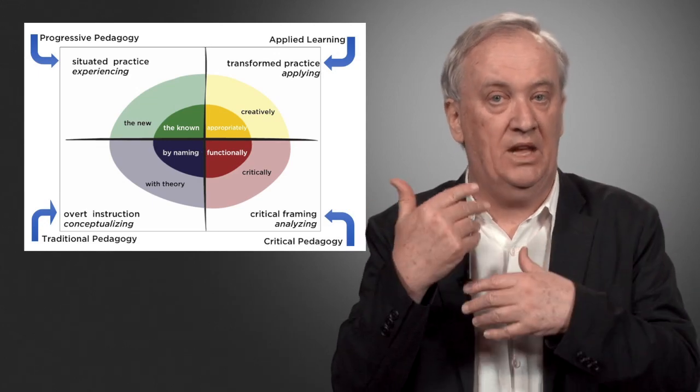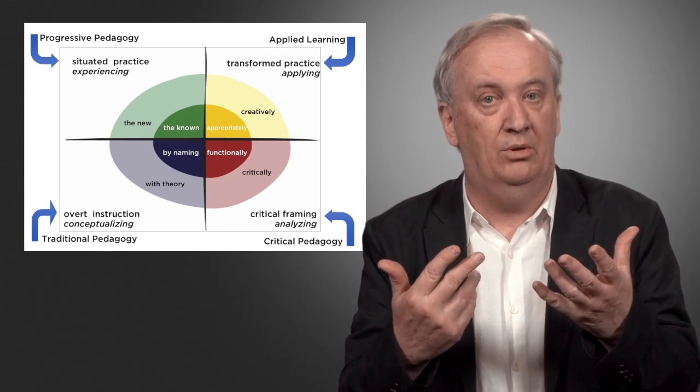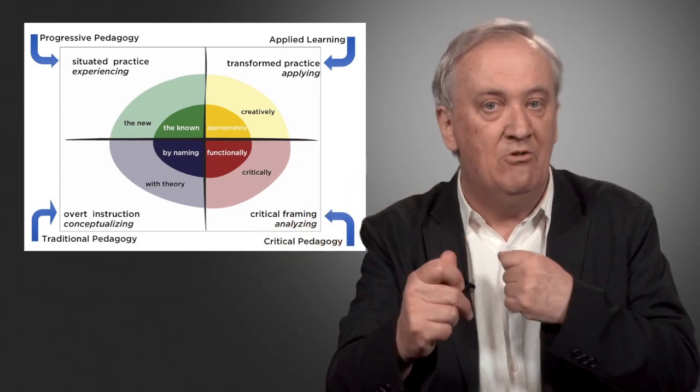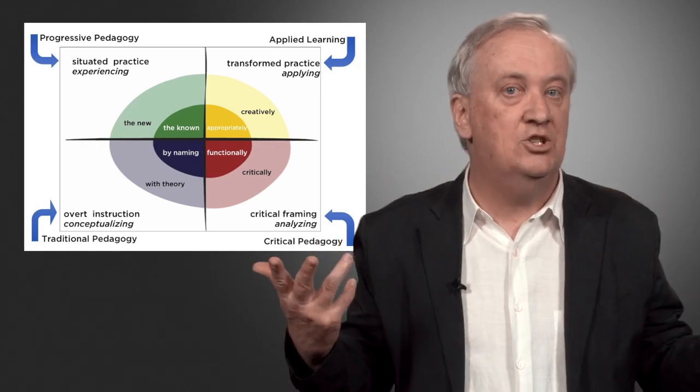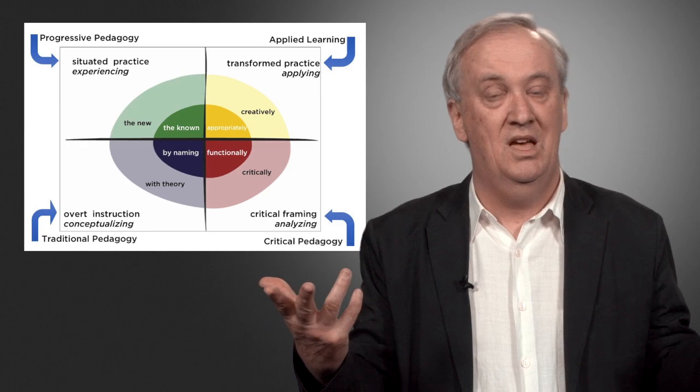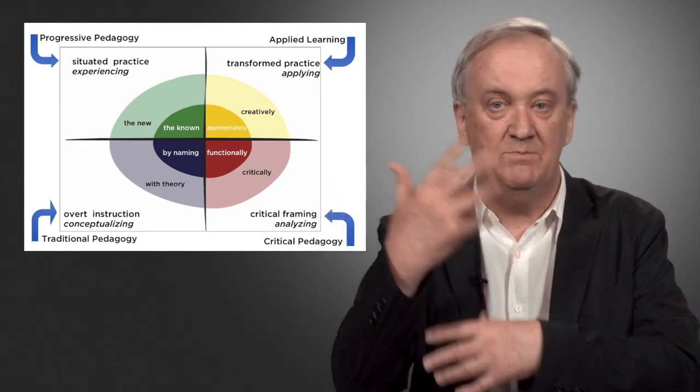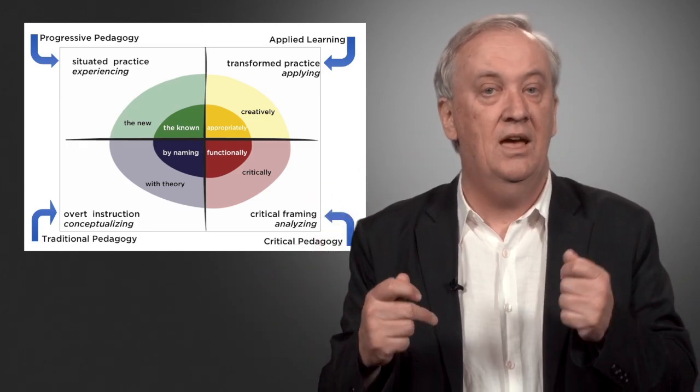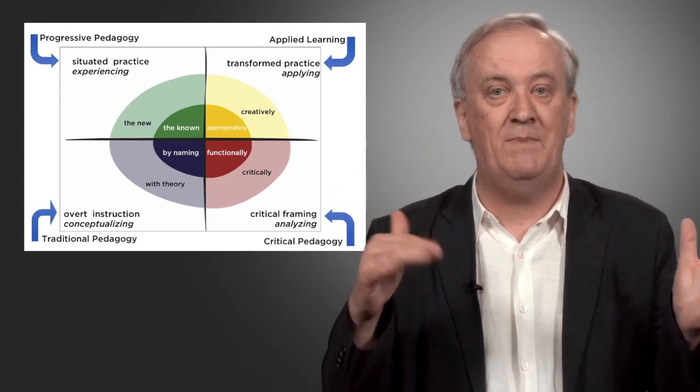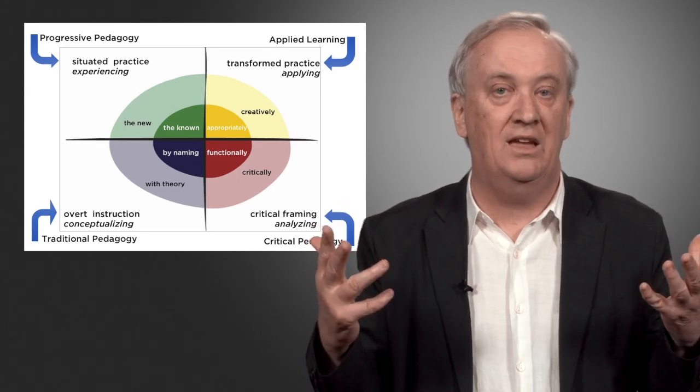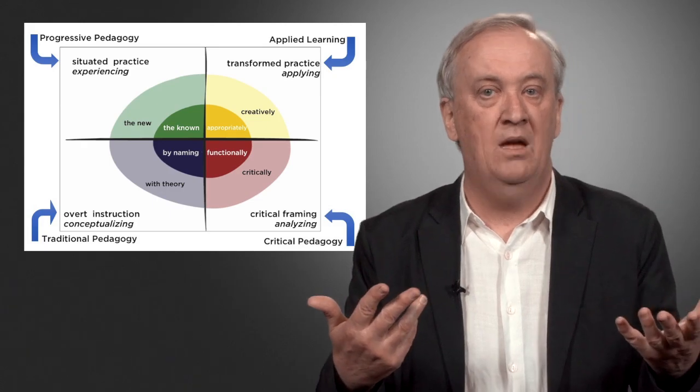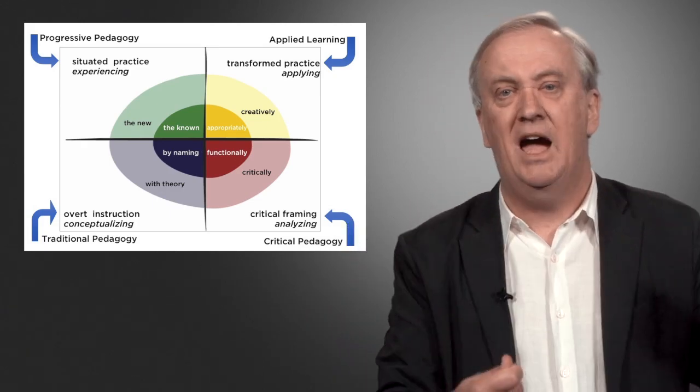So let me just give a literacy example. So situated practice, which becomes experiencing, is experiencing the known—get the students to bring in texts from their own lives, and they're going to be diverse because students' diverse backgrounds and interests and experiences are diverse. But also immerse them in new experiences, expand the range of things that they know. And by the way, this was typically what progressivist literacy pedagogy has done.